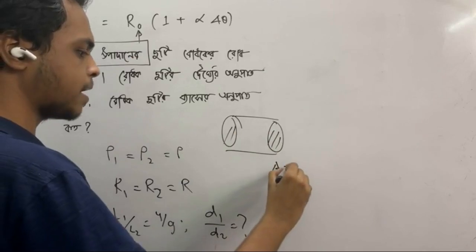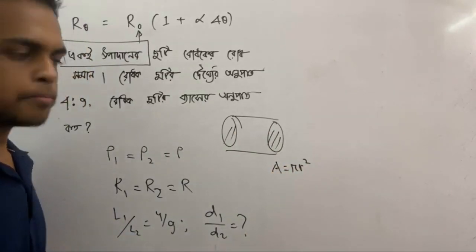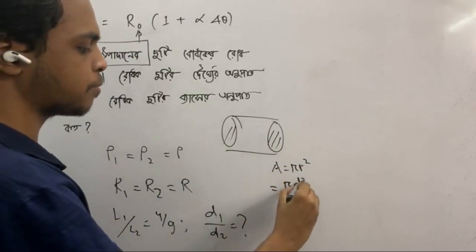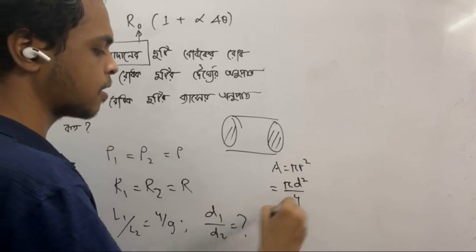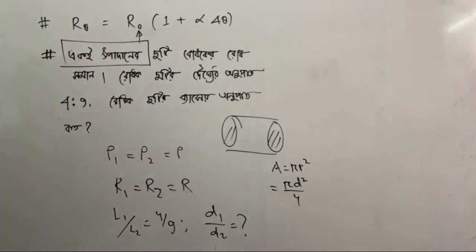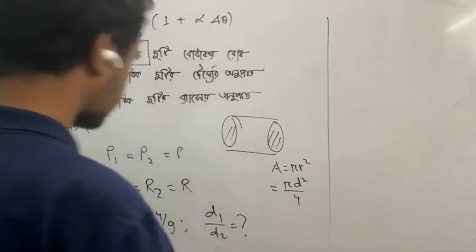Area A equals π r² equals π into d² by 4. Now r equals d by 2 — that's the diameter relation. So simplifying, we get a clean expression. Now look at this — it becomes straightforward.